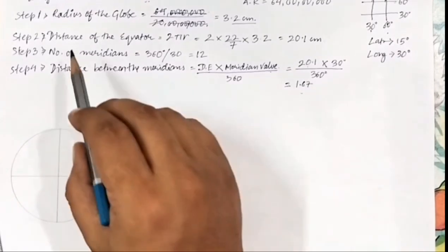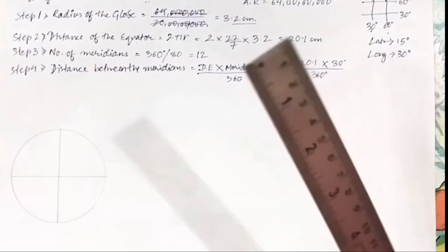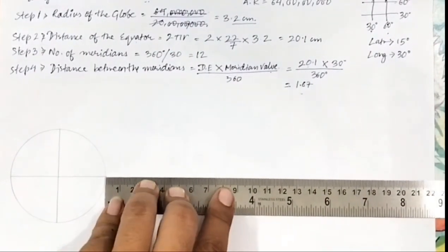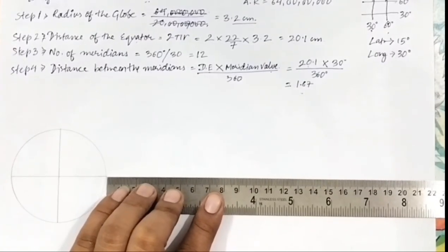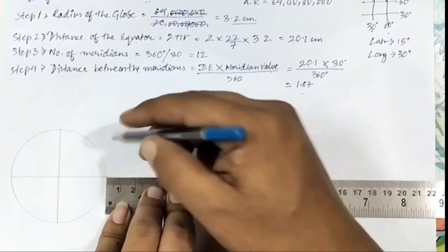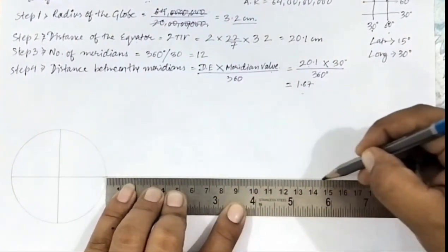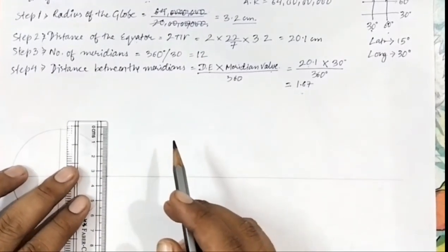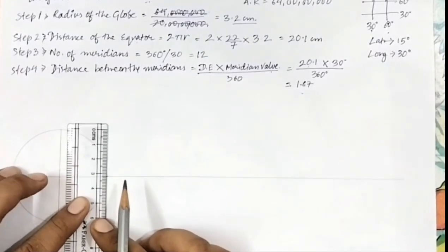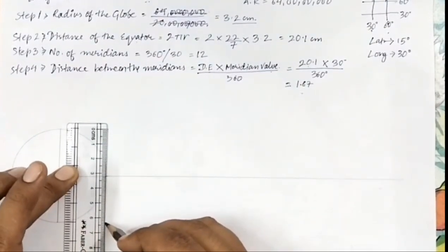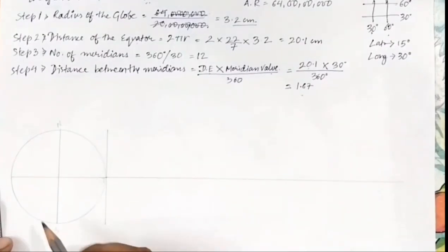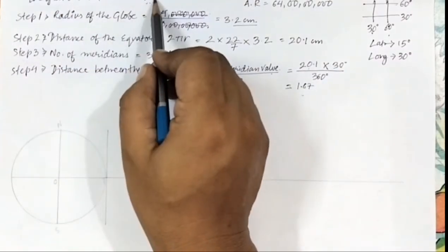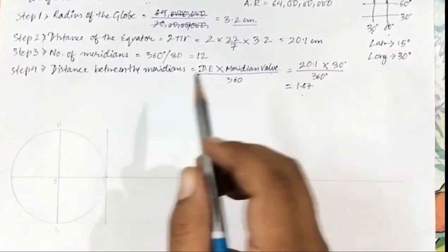Now we have to draw the distance of the equator. We have already drawn the equatorial diameter of the circle, so we extend it up to the length of 20.1 centimeters. Students, please make sure your pencils are sharp when drawing any graphical representation of projections. We also need a pair of set squares to draw things parallel to each other. You can see I have drawn a vertical line touching the circumference of the circle — that will be our meridian.